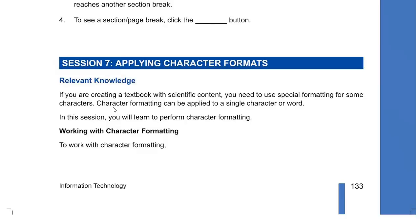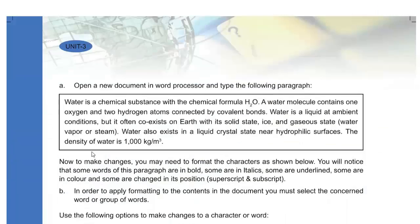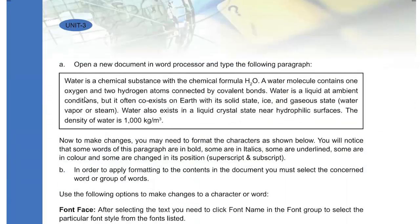Now you have applying character formats. Character format is the way you want your characters to look. If you are creating a text box with specific content, you may need to use special formatting for some characters. Character formatting can be applied to a single character or a whole word. In this section you will learn how to perform character formatting. To work with character formatting, open a new document in the word processor and type your content.